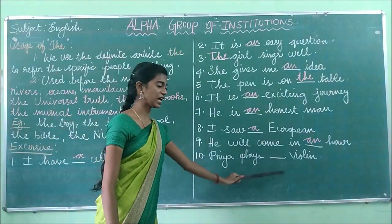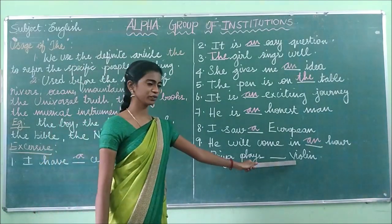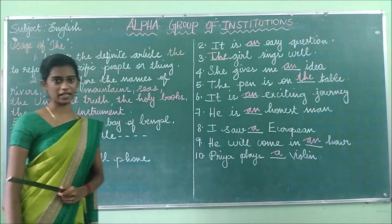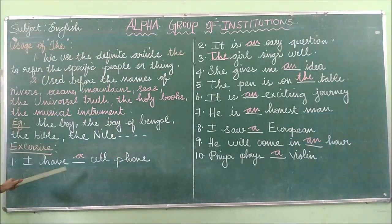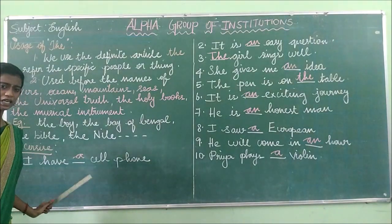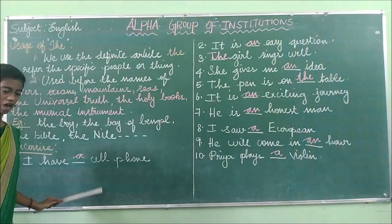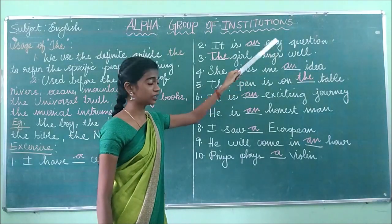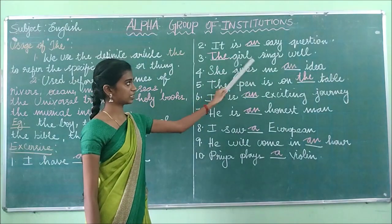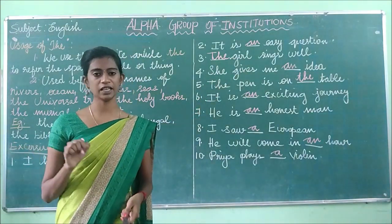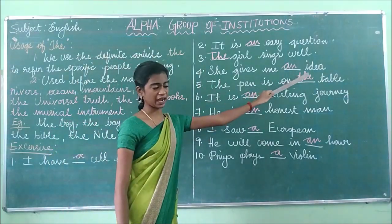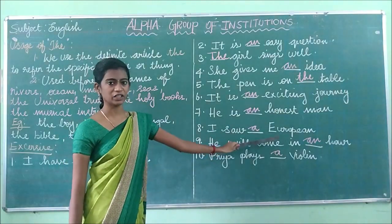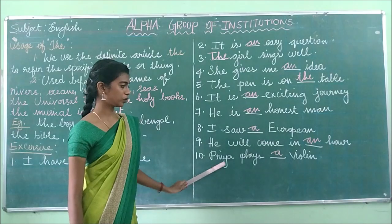Last sentence: 'Priya plays ___ violin.' The word 'violin' starts with a consonant sound, so we use 'a'. Answer: Priya plays a violin. To recap: I have a cell phone; it is an easy question; the girl sings well; she gives me an idea; the pen is on the table; it is an exciting journey; he is an honest man; I saw a European; he will come in an hour; Priya plays a violin.